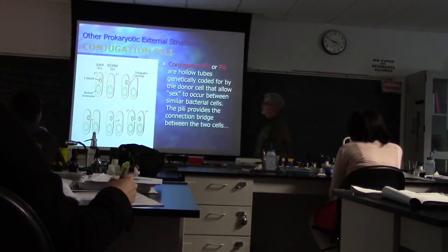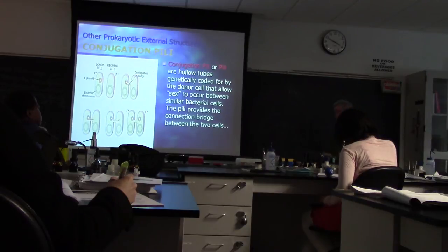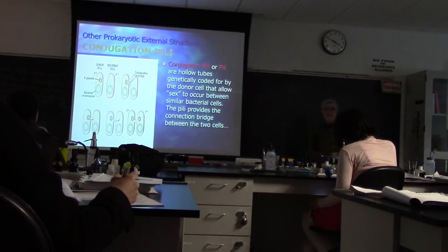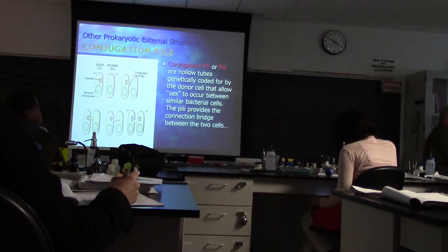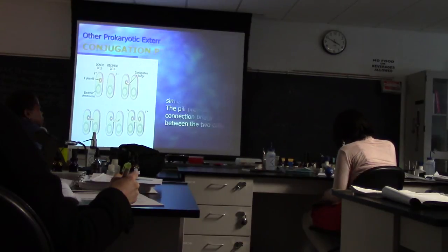This is an external structure that forms a hollow protein tube used for exchanging DNA, and it's called a conjugation pilus if it's one, or conjugation pili if there's more than one.